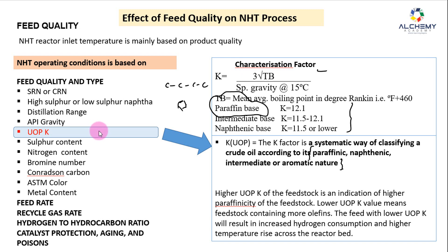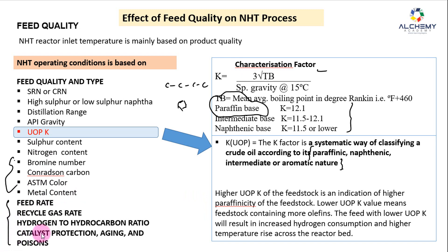In the next video, I'll discuss bromine number, conradson carbon, color, metal content, and a few other related topics under the effect of feed quality on the NHT process. That's all for this video. If you have any doubts, please comment in the comment box and I'll try to clarify. Thank you so much.